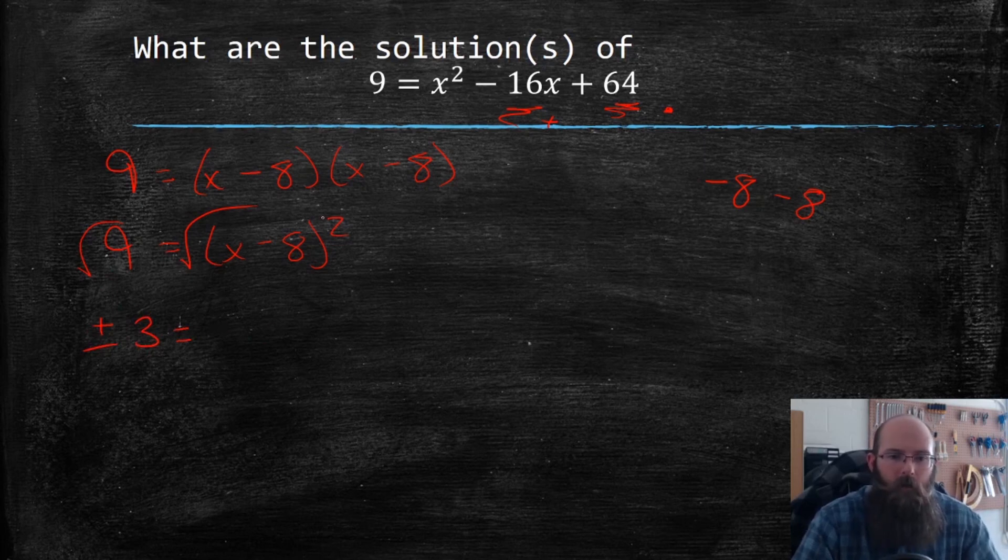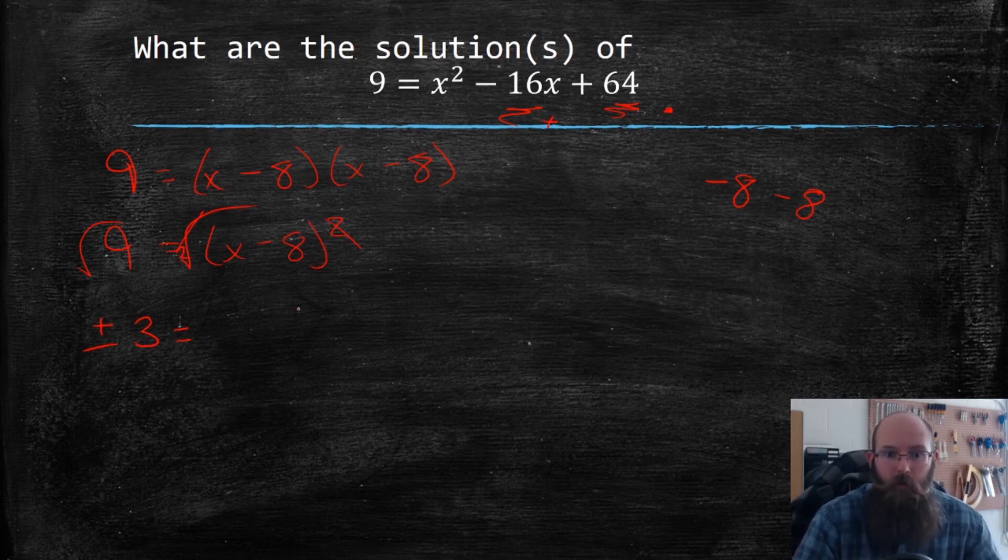So on the right side, I now have the square root and the square cancel. A lot of people don't know this, but there's actually a little two inside a square root and three inside a cube root, and so on. And this is then just x minus eight.